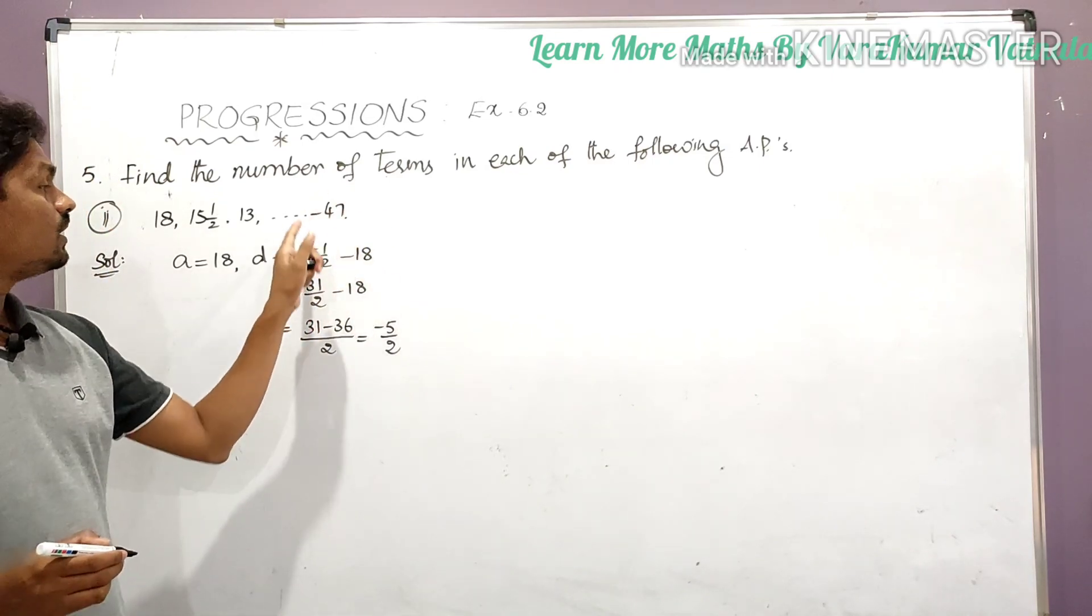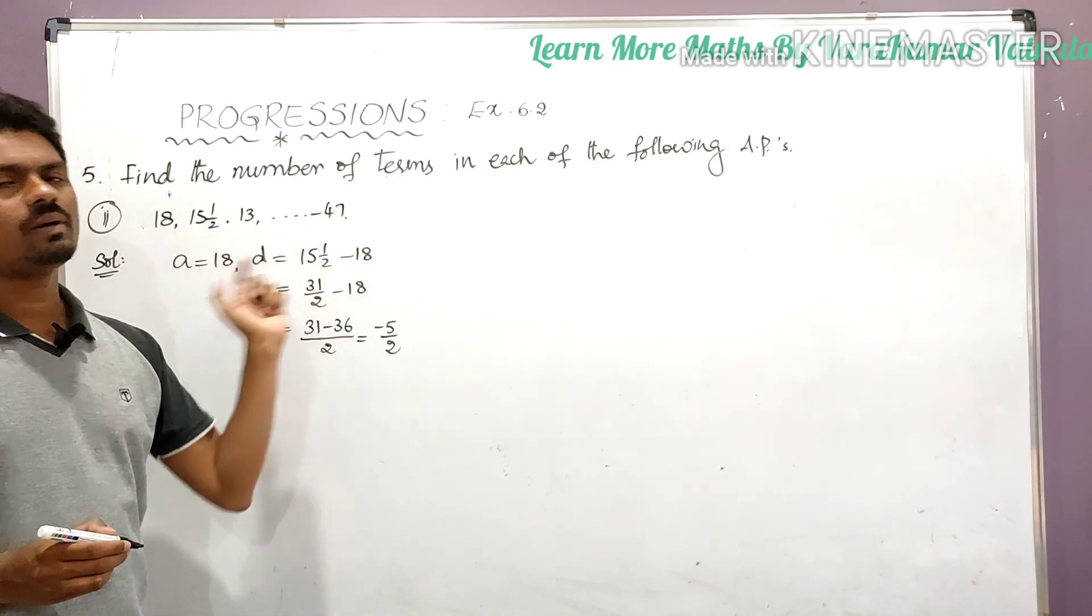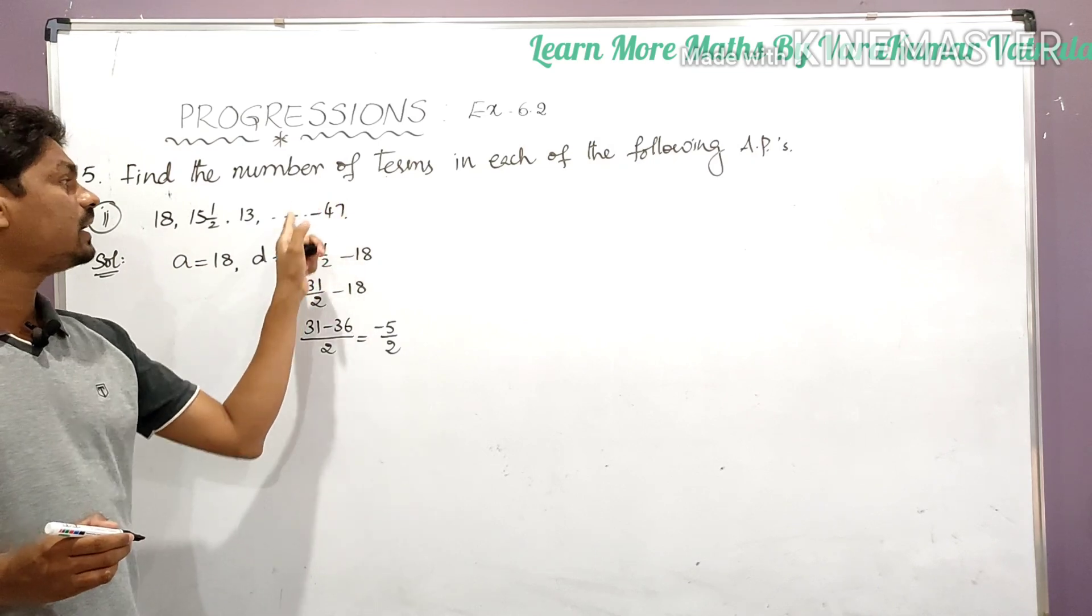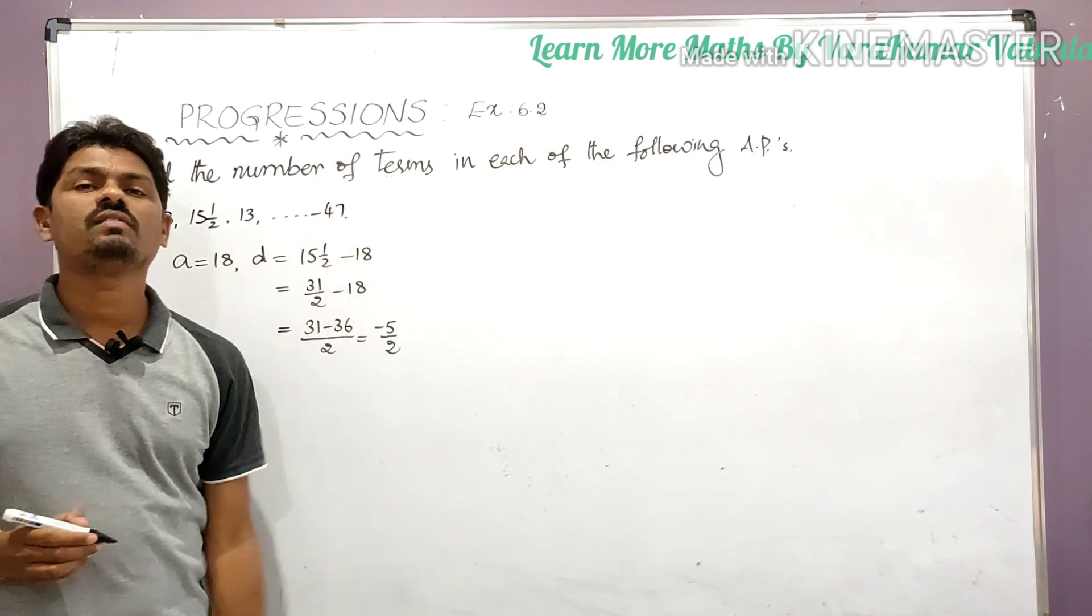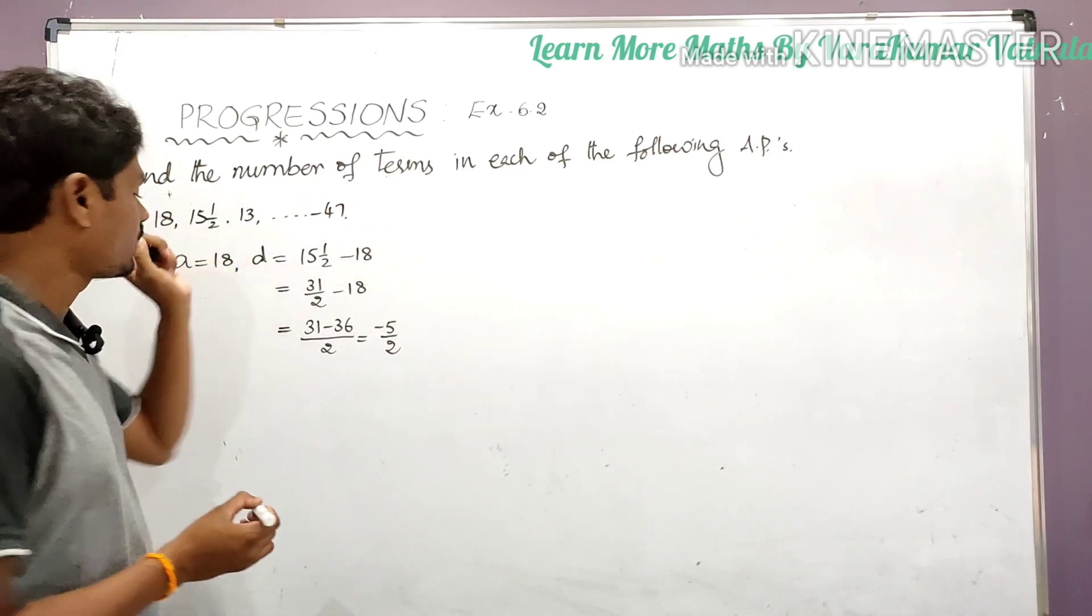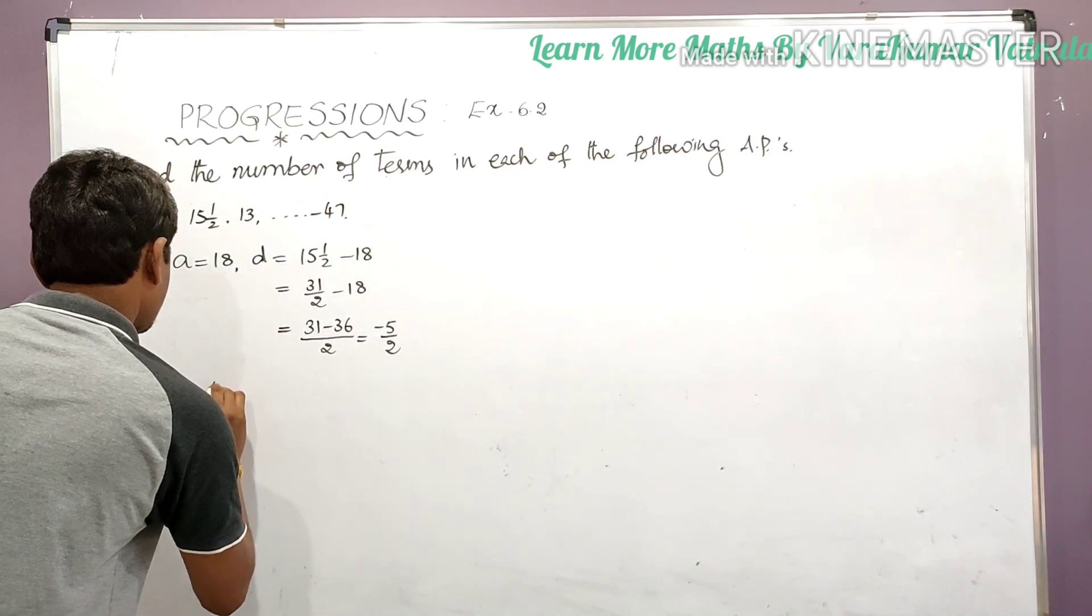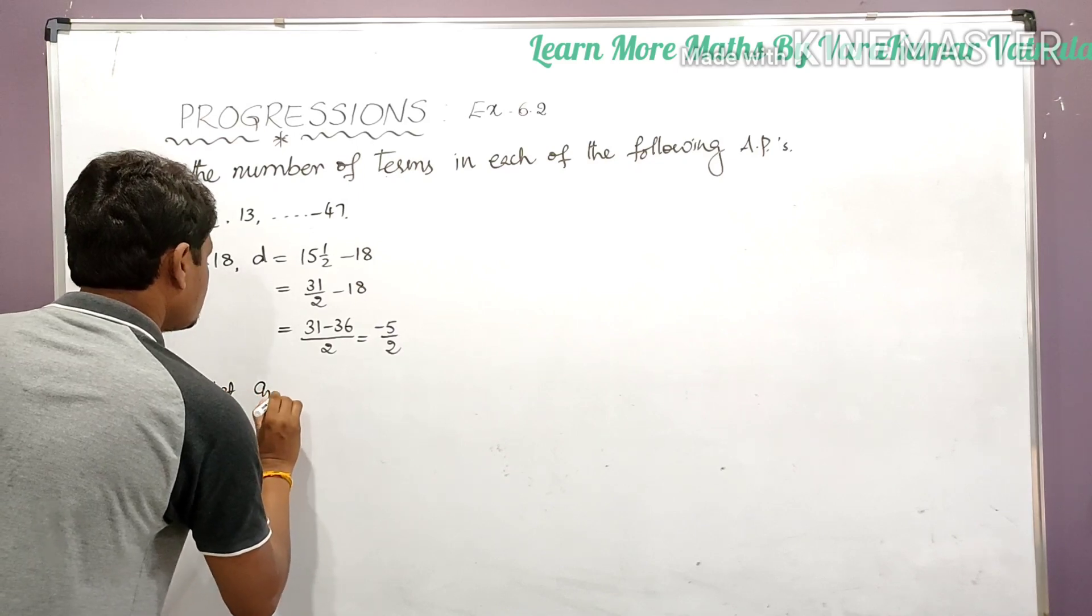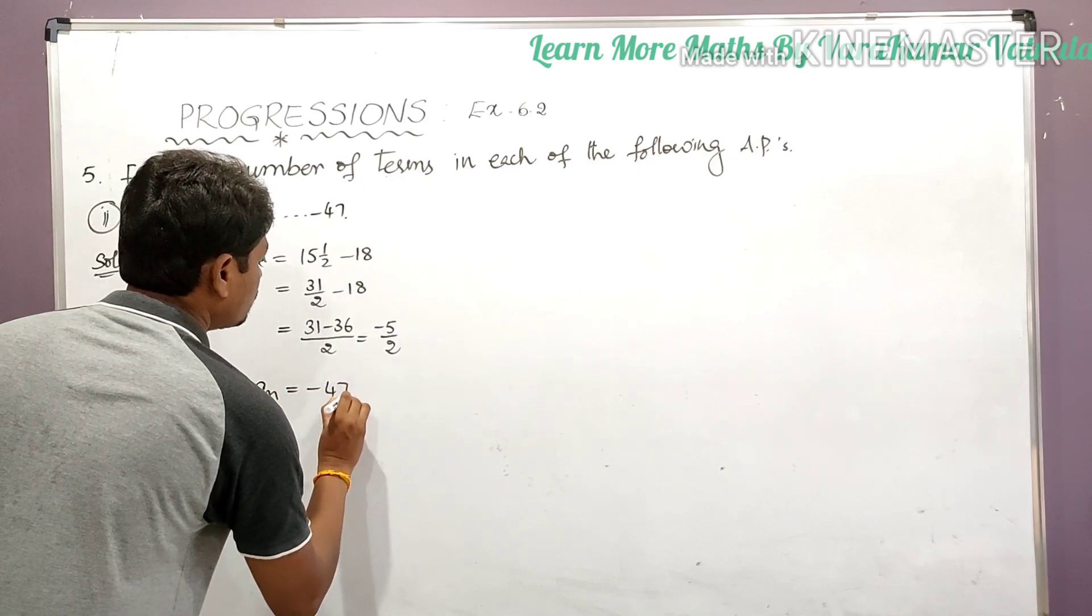So he is asking find the number of terms. For that, let minus 47 be an nth term. Let minus 47 be the nth term. So for that see here, let a_n is equal to minus 47.